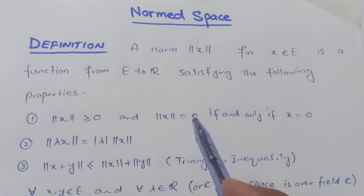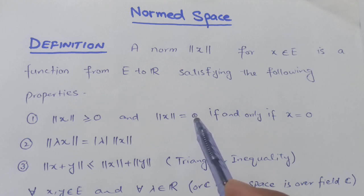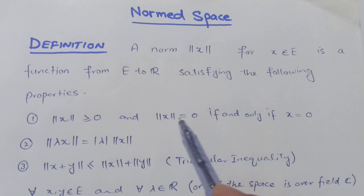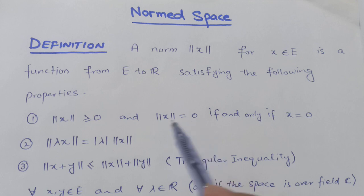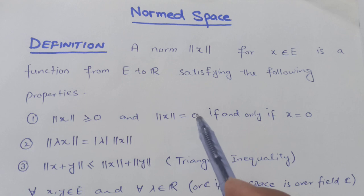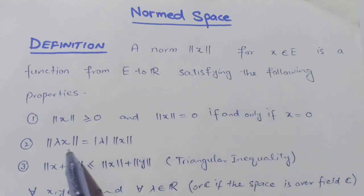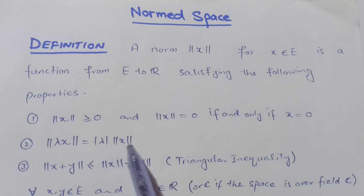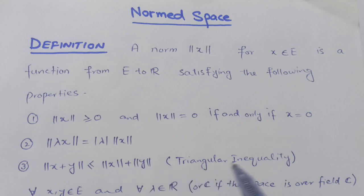In functional analysis, we do not use vector notation for vectors, so 0 may be treated as a scalar as well as a vector depending on context. Here we are comparing with a vector, so this 0 is the zero vector. Second property: ||λx|| = |λ| · ||x||. Third property: ||x + y|| ≤ ||x|| + ||y||, which is known as the triangle inequality.